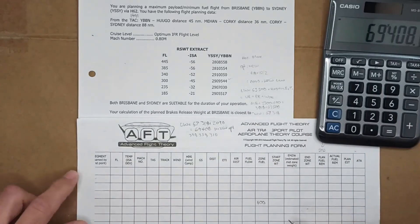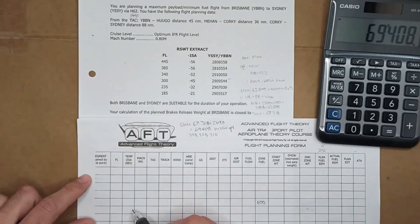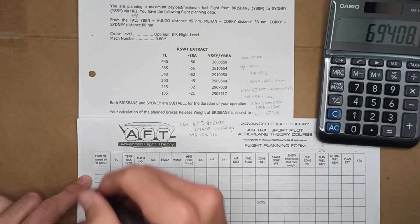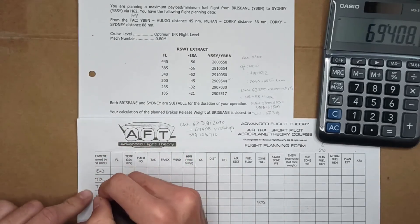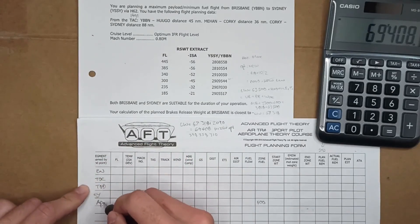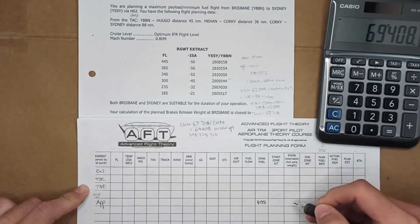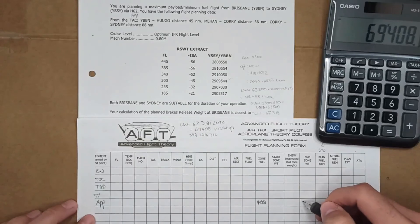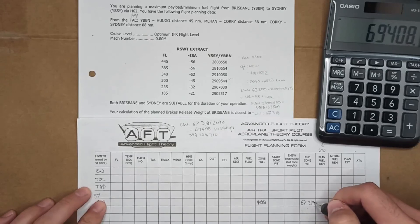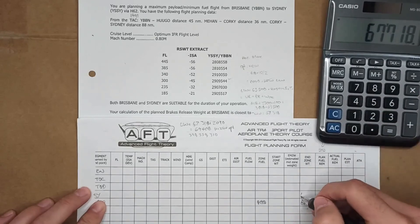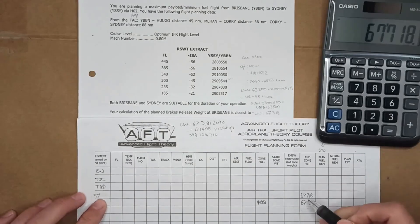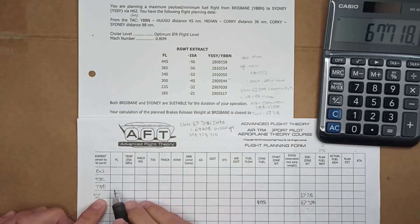We construct the flight plan now. So we know it's Sydney Brisbane so I'm not going to put any waypoints or anything like that. We're going Brisbane to top of climb, top of descent to Sydney and then we have our approach fuel. Approach fuel is always 400. Our landing weight was 67,318 plus 400 equals 67,718. That's our end zone from landing.